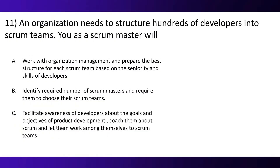Question 11. An organization needs to structure hundreds of developers into scrum teams. You as a scrum master will: Option A, work with organization management and prepare the best structure for each scrum team based on seniority and skills of developers. Option B, identify a required number of scrum masters and require them to choose their scrum teams. Option C, facilitate awareness of developers about the goals and objectives of product development, coach them about scrum and let them work among themselves to form scrum teams.